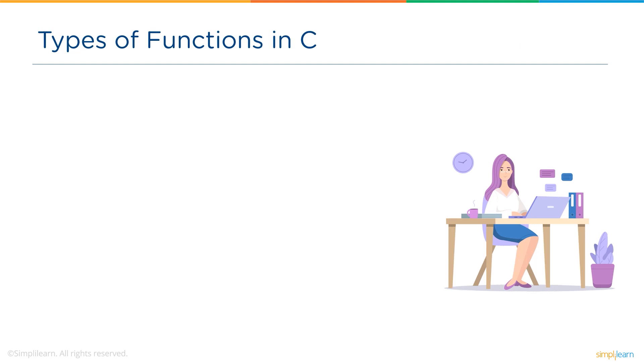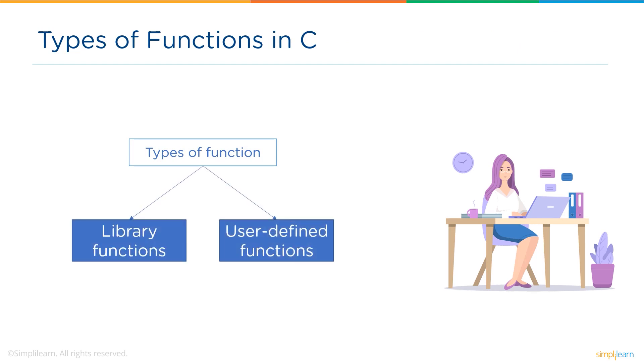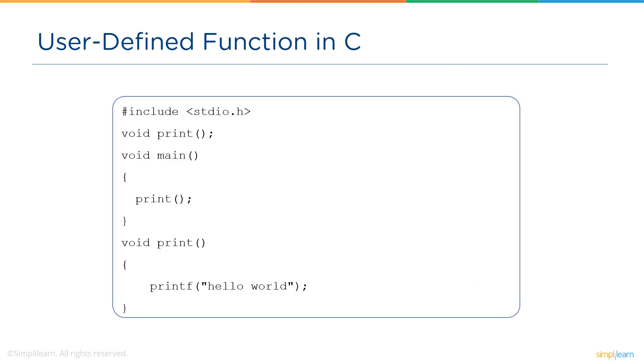C has two types of functions and they are library functions and user defined functions. Library functions are built-in functions or we can also say predefined functions in the header file. For example, functions like square root, string length, printf, scanf, etc. are predefined functions in C. To use library functions in the C program, we include a header file corresponding to that function. Functions that the user defines are called user defined functions.